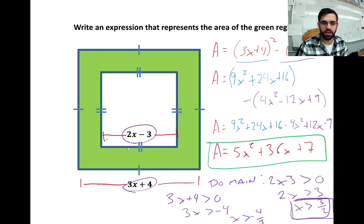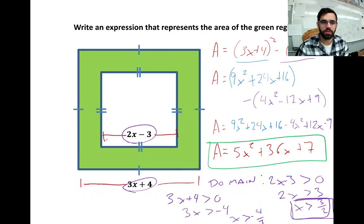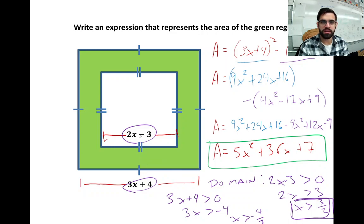The little square inside also has to have a positive length — zero or negative length doesn't make sense. You can't measure negative lengths on squares. So 2x - 3 must also be greater than 0, which means x must be greater than 3/2. Any number bigger than 3/2 is also going to work for the bigger square, since this restriction is more restrictive than the other.